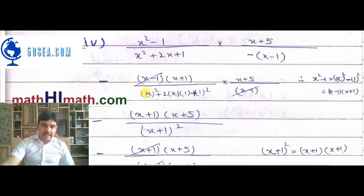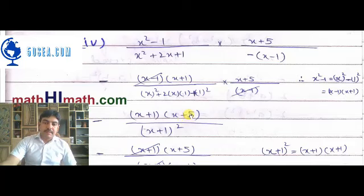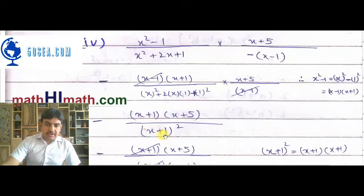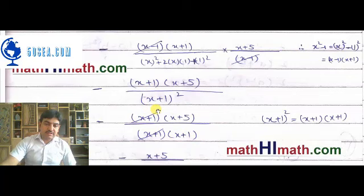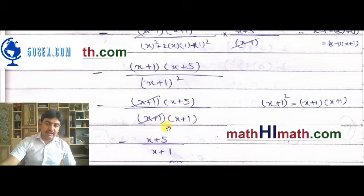So we have x plus 1 squared in the denominator, which is x plus 1 times x plus 1. The numerator has x minus 1 times x plus 1. One x plus 1 cancels out, so finally this is minus into x plus 5 over x plus 1. This question is completed.